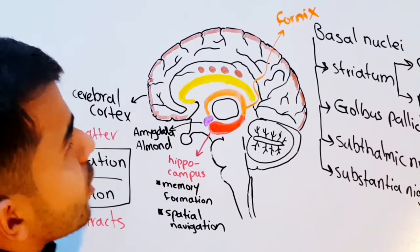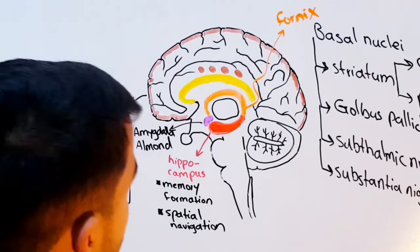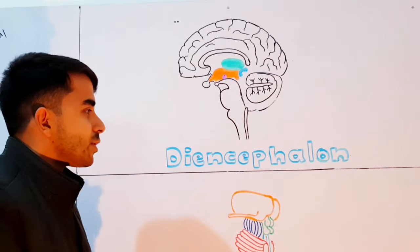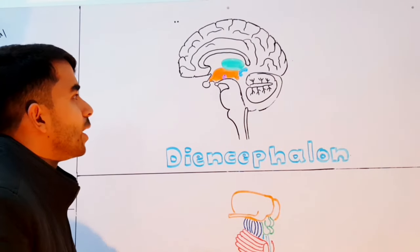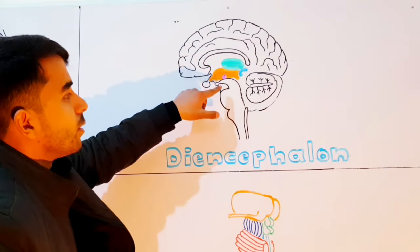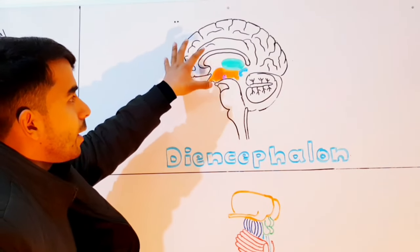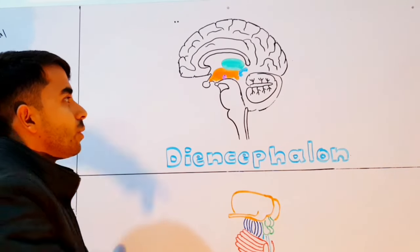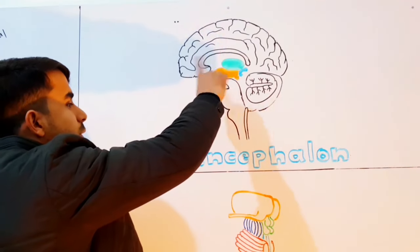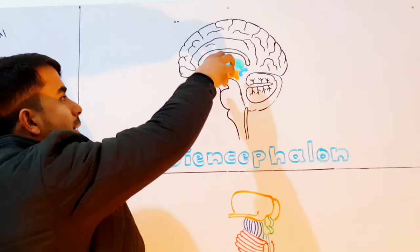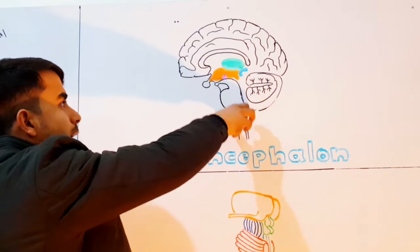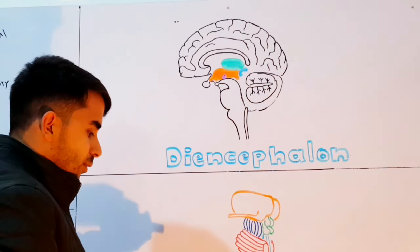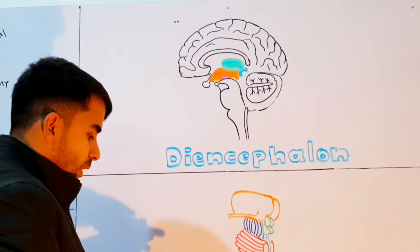Now let's talk about the diencephalon — the second major region of your brain. The diencephalon sits atop the brain stem and is enclosed by the cerebral hemispheres. It is composed of several structures, which we'll cover now.